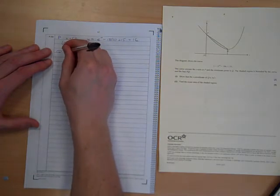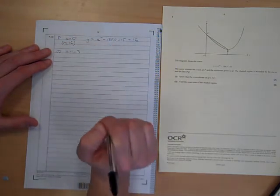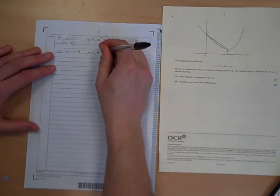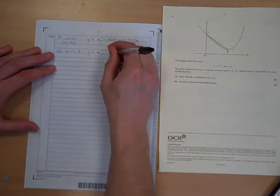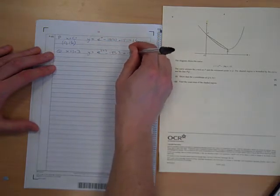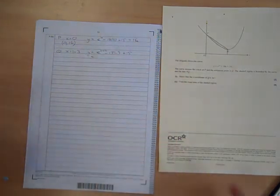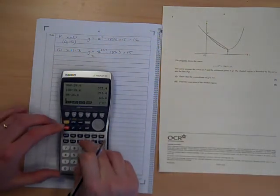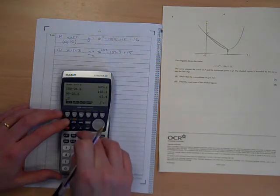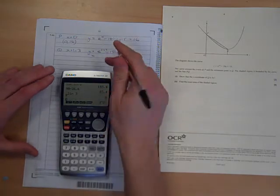Q is the point where x is ln3. We've been given that. And y is e to the 2ln3 minus 18ln3 plus 15. Well e to the 2ln3, in case we had any doubt at all, I'll show you, it's going to be 9. There we go, it's 9.